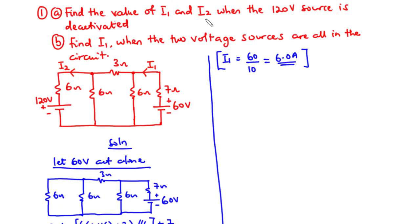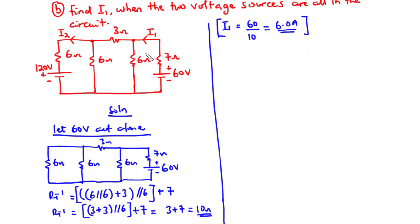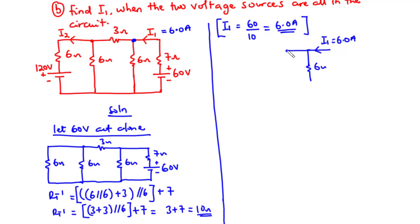We are also asked to find I2 when the 120 volt source is deactivated. We expand the circuit: I1 = 6 amperes approaches a junction where a 6 ohm resistor and the combination of the three resistors (which equals 6 ohms) are connected in parallel. Since both resistors have the same value, the total current is shared equally — 3 amperes in each branch.